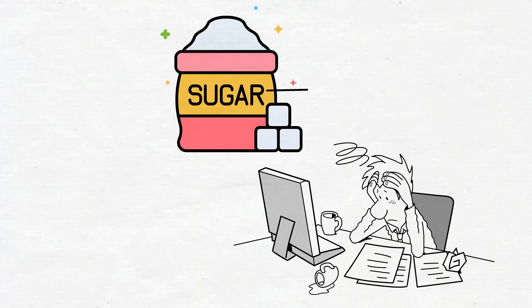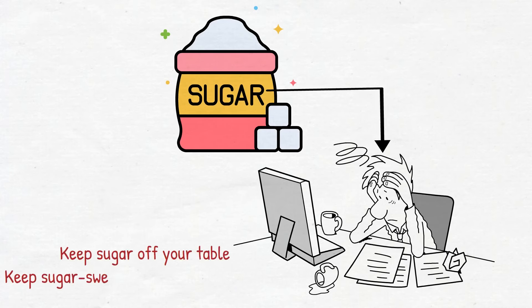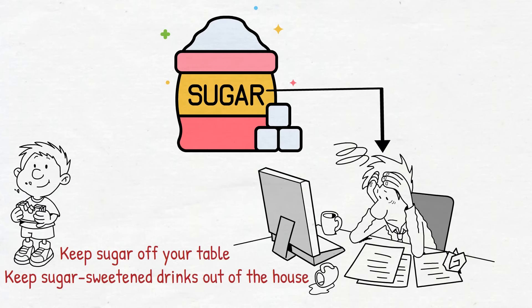In addition, too much sugar can cause serious damage to the brain. In other words, keep sugar off your table, keep sugar-sweetened drinks out of the house. The average child in a middle-class family consumes 32 teaspoons of added sugar daily, 10 more than the average adult.